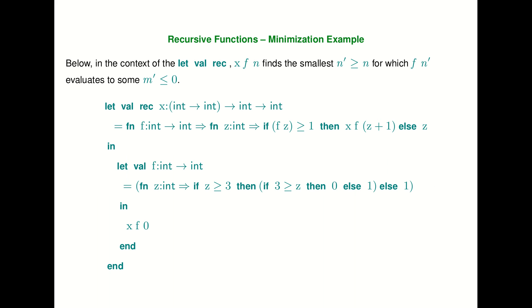Here's an example of a minimization routine — a higher-order function. The function xf of n finds the smallest n' bigger than the argument n for which f(n') evaluates to some number less than zero. We're defining a recursive function that takes a function and an integer as arguments. If f(z) is bigger than one, we call the function recursively and try the next bigger number; if it's zero or less, we return zero.